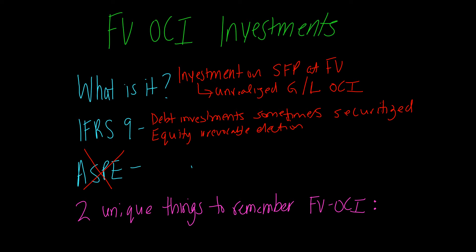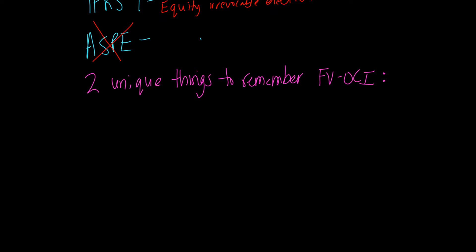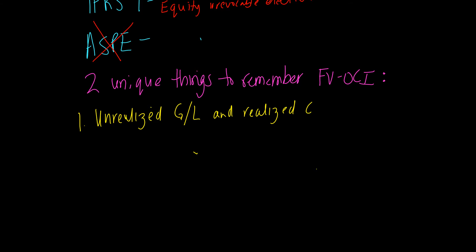There are two unique things about the fair value OCI model that are important to remember — things that do not occur with any of the other investment valuation models. The first thing is that unrealized and realized gains and losses are treated differently. An unrealized change in the investment is a change in the value of the investment that we continue to hold, and we're going to be recognizing unrealized gains and unrealized losses through OCI.